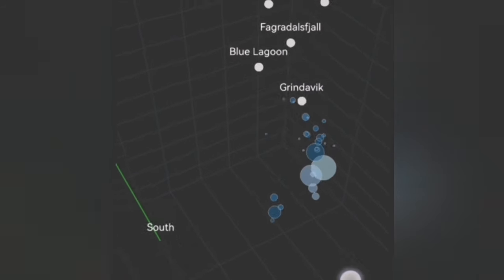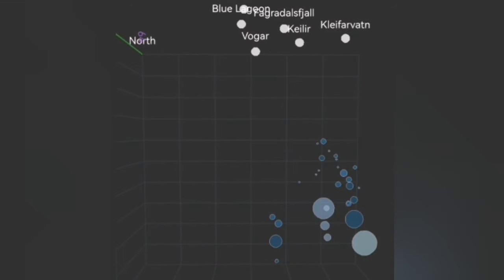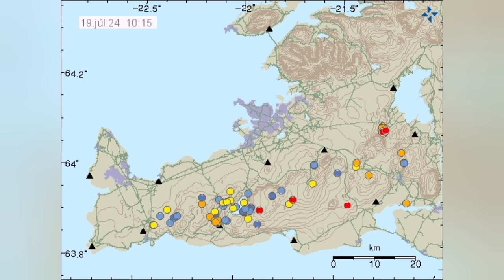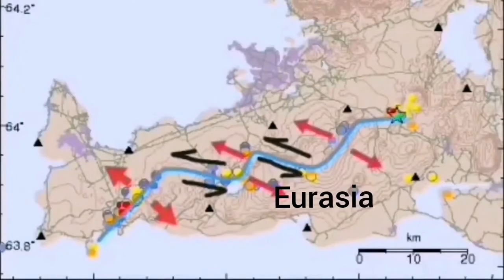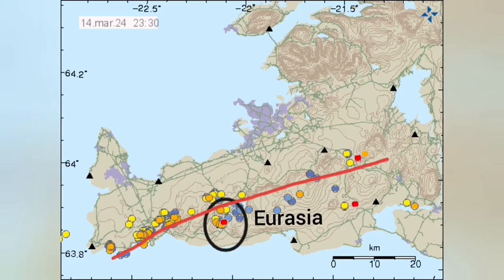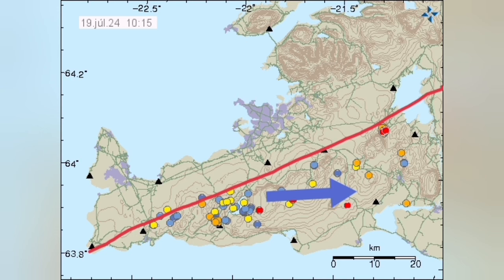This is the contact point of the Eurasian and American plates. The Eurasian plate is moving eastward, and as it moves, the transform faults transfer the movement toward the east. This is inside the Eurasian boundary part, which you can see in the red line — Eurasia is where these earthquakes and eruptions are happening.